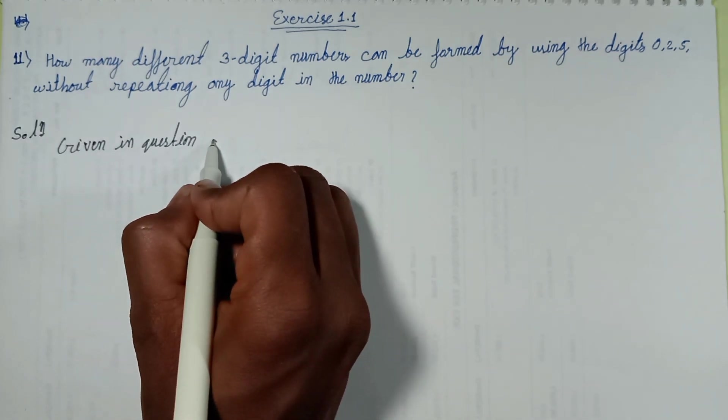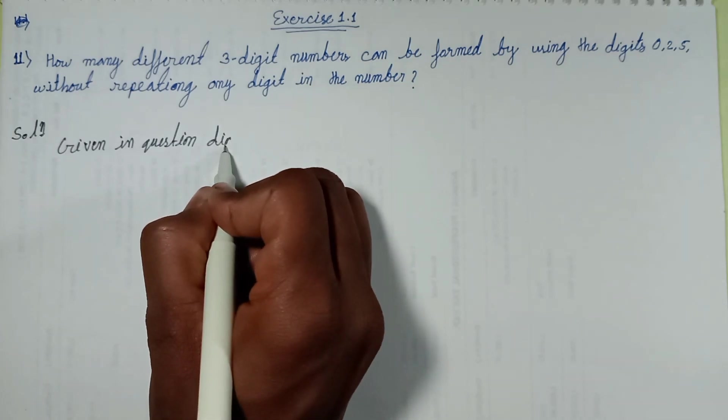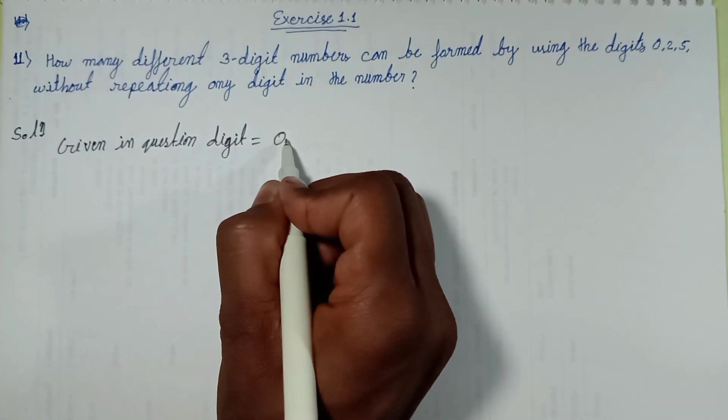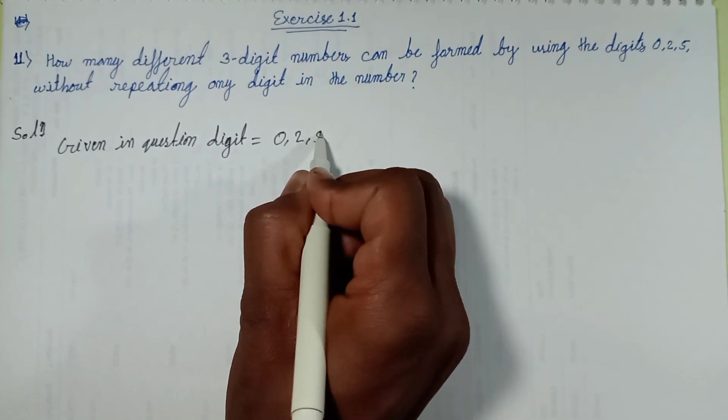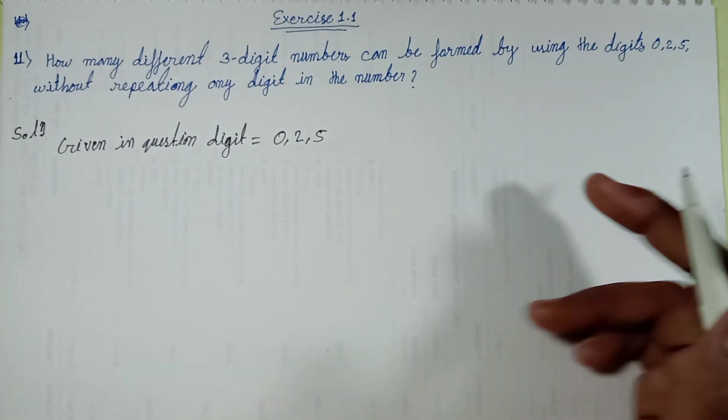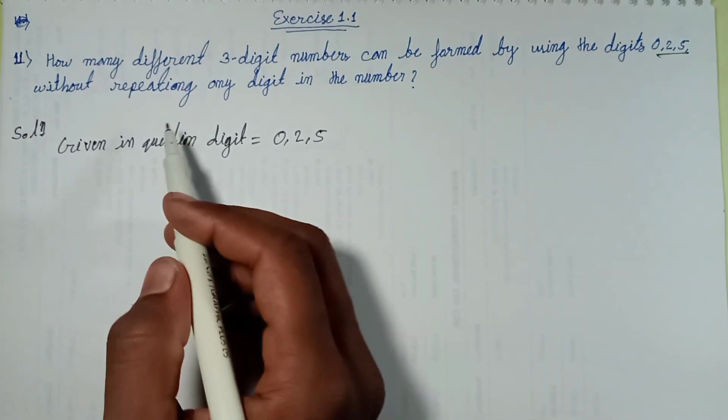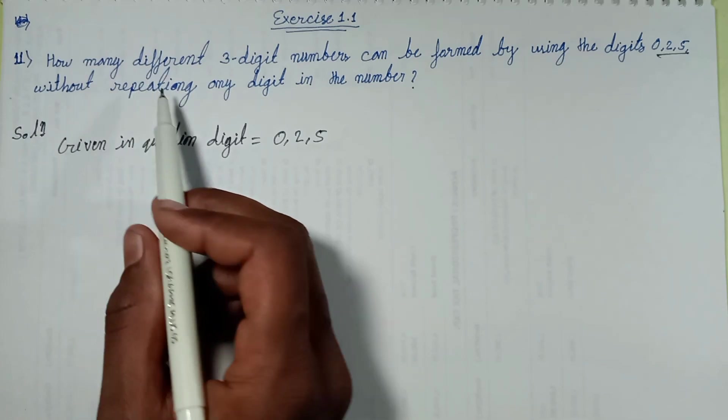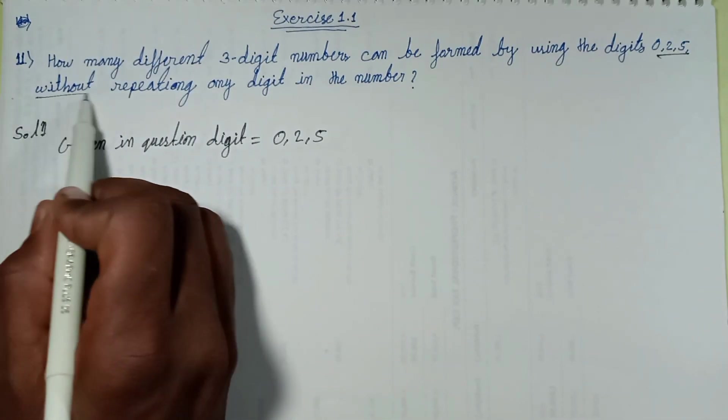Given in question: digits 0 to 5. This digit given in question. Find 3-digit numbers without repeating.